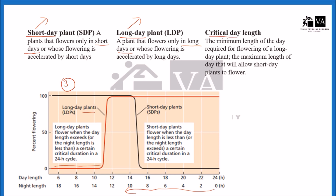So what is critical day length? Critical day length is the length of the day and night above and below which a plant would not flower. It is the minimum length of the day required for flowering of a long day plant. For example, in a 24-hour cycle, a long day plant needs at least more than 12 hours of light for flowering — the minimum below which it will not flower.